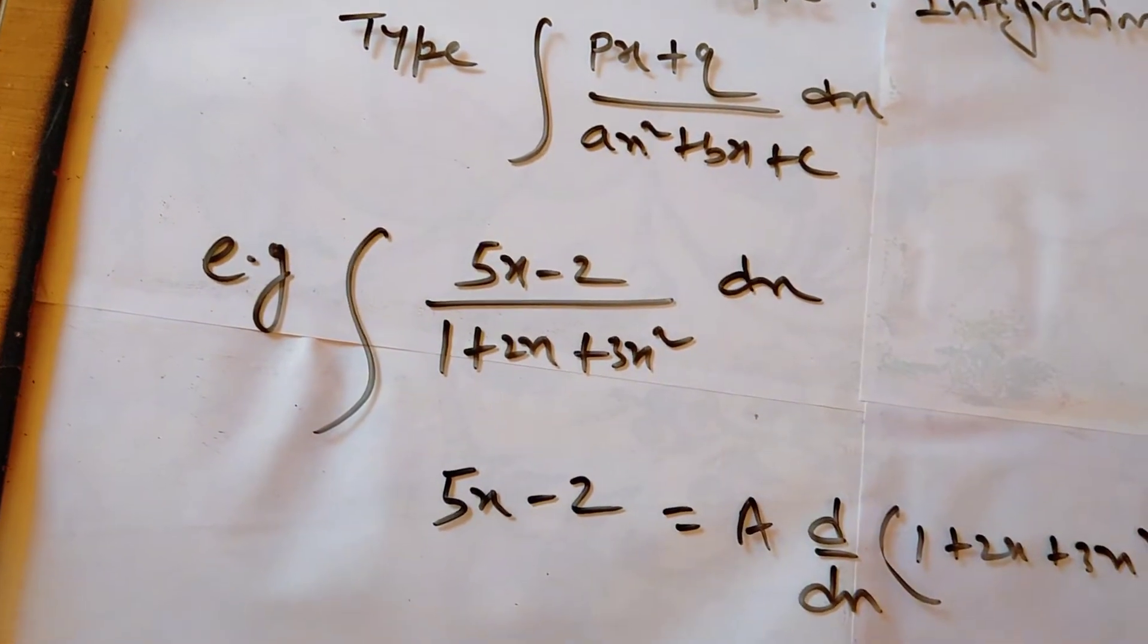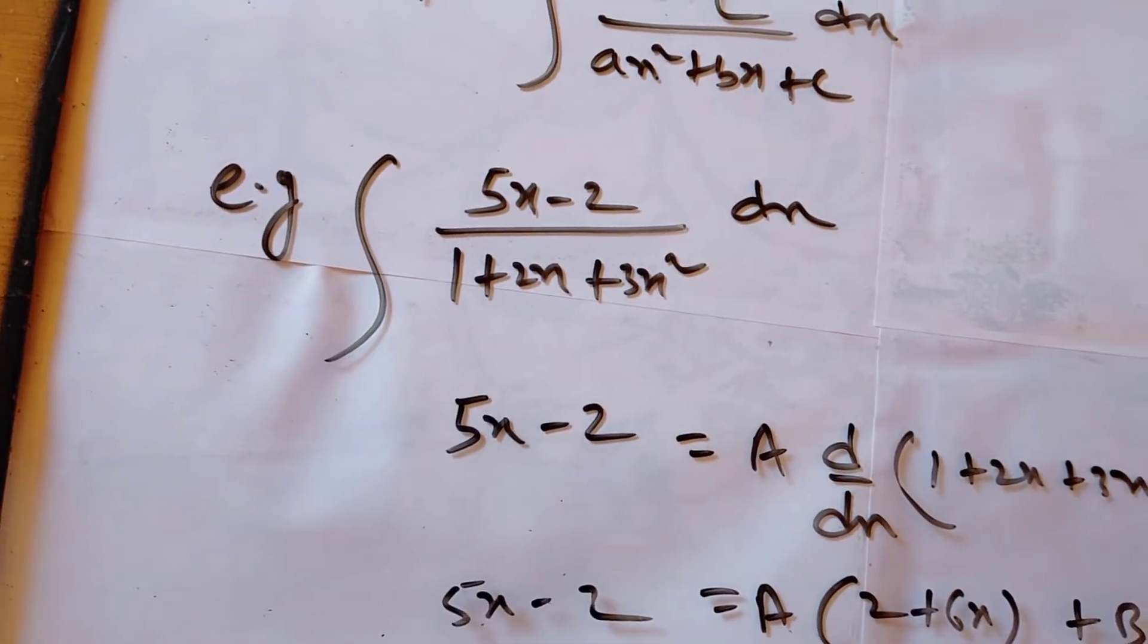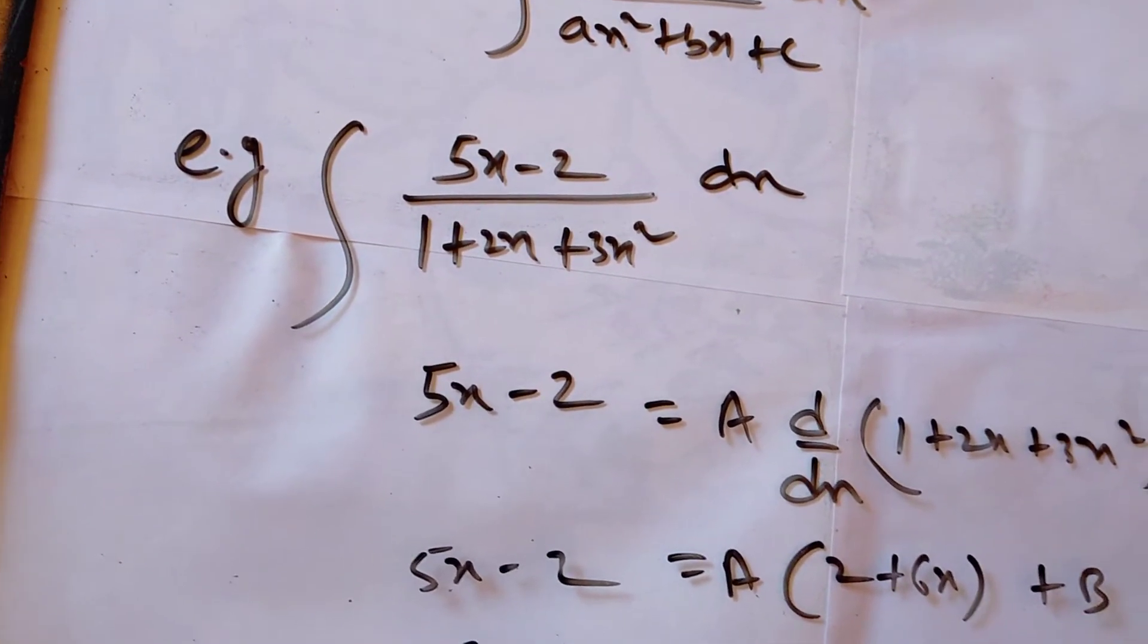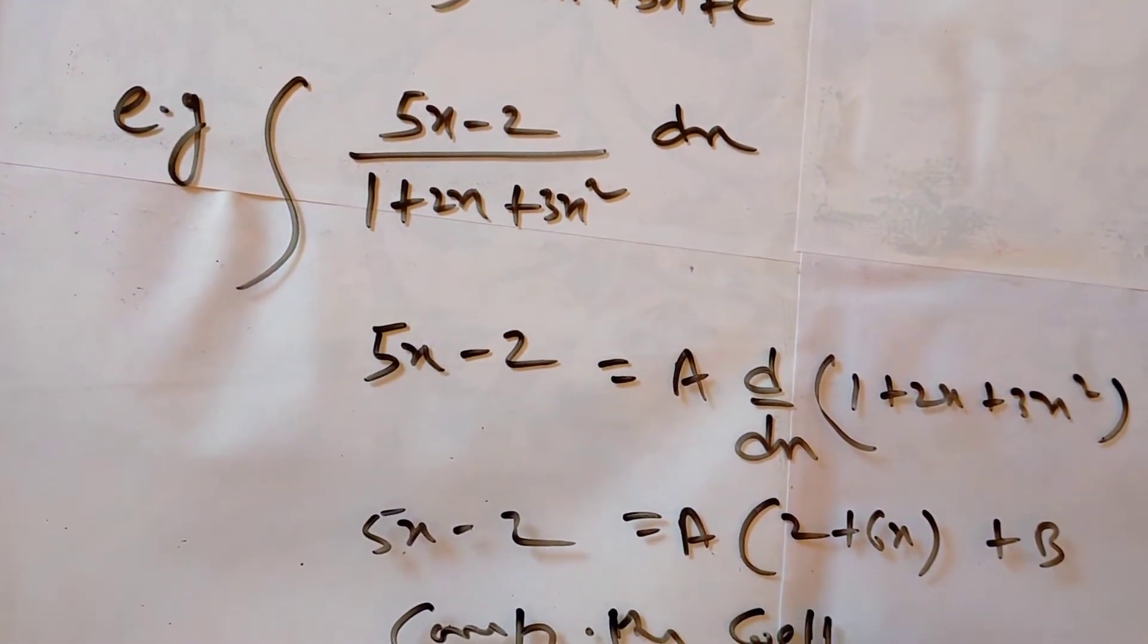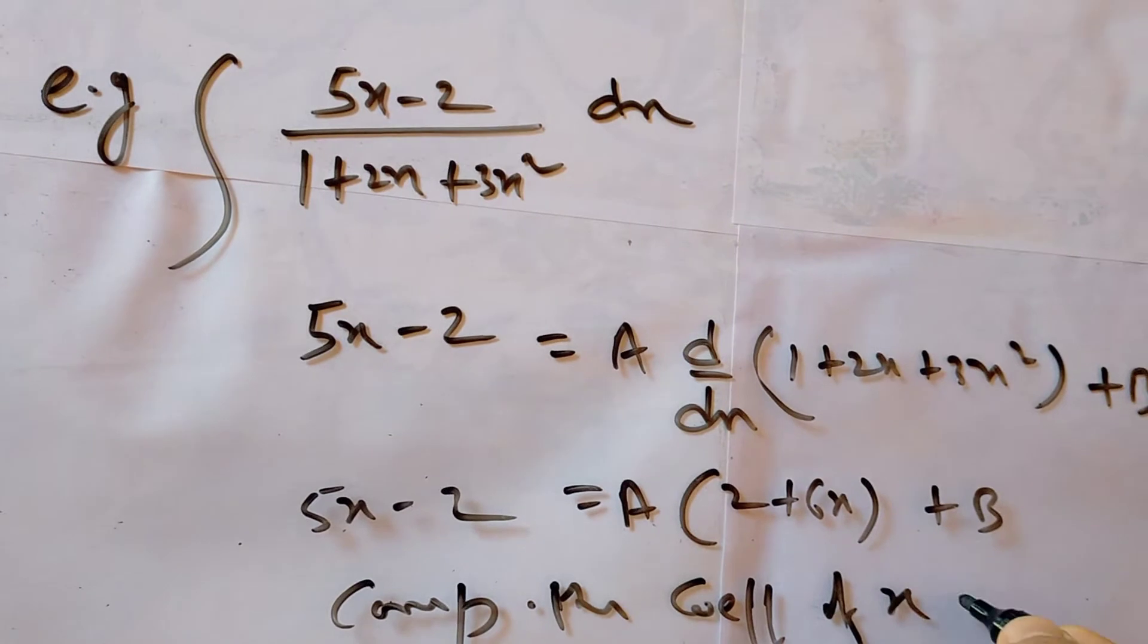5x minus 2. Now here what you have to do, you write here compare the coefficients, compare the coefficients of x and constant.